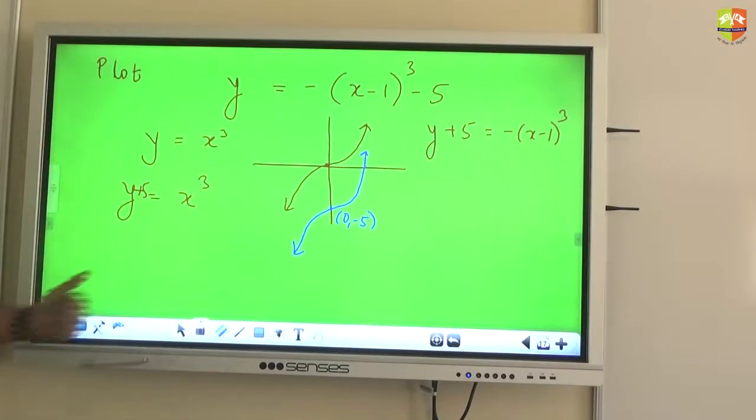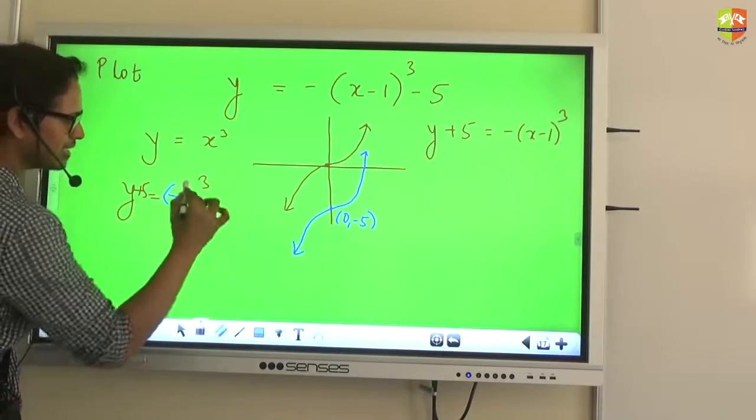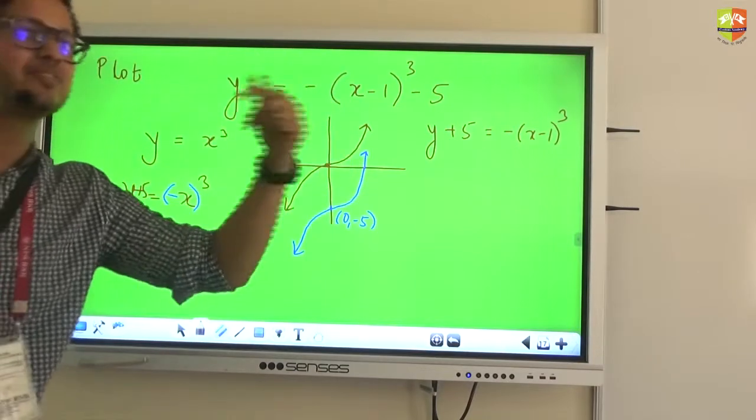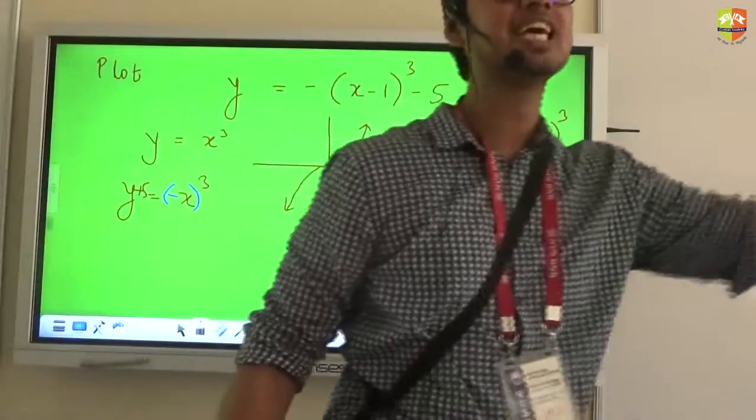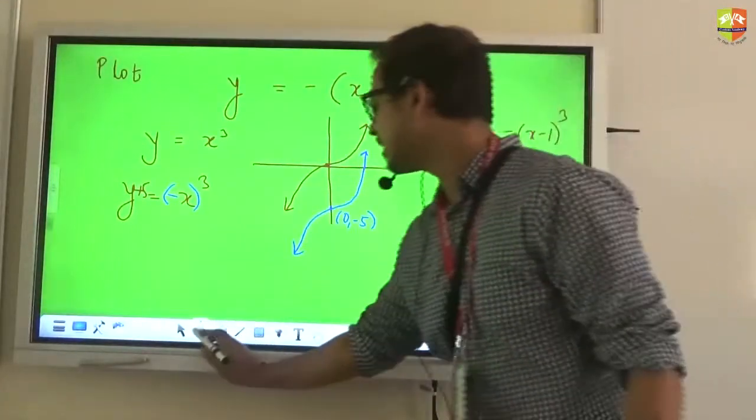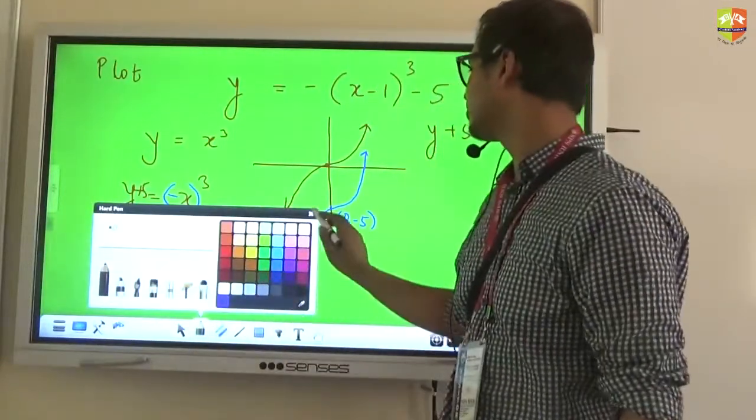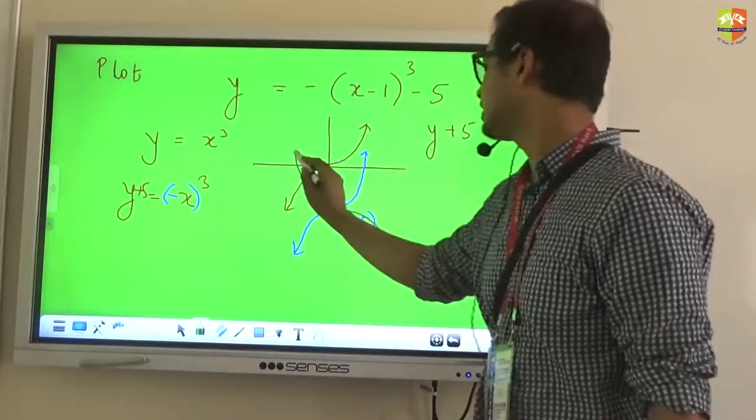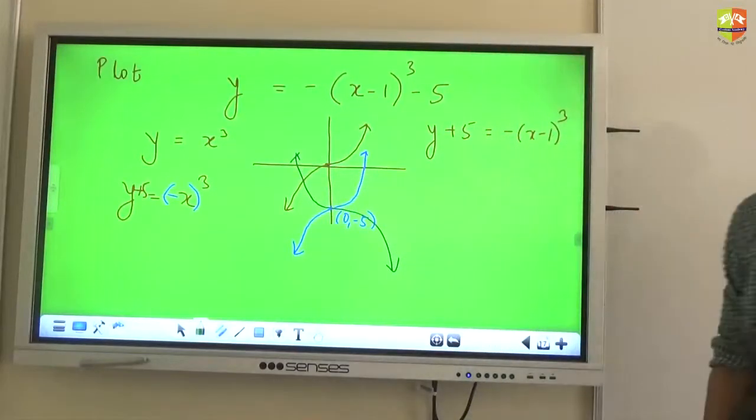Next, what is the next step that I have to do to get minus x minus 1? Change x with minus x. If I change x with minus x means I am reflecting this graph about y axis. Again I am repeating the rule. Changing the sign of x means reflecting the graph about y axis. Changing the sign of y means reflecting the graph about x axis. So if we reflected about y axis, this is how you will see the graph. Is that fine? Correct.